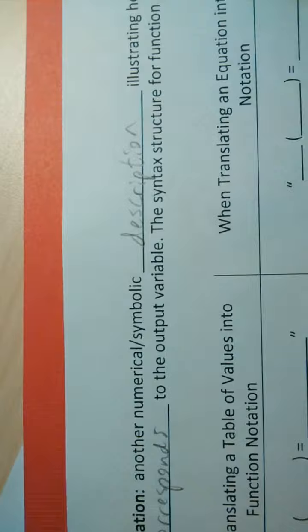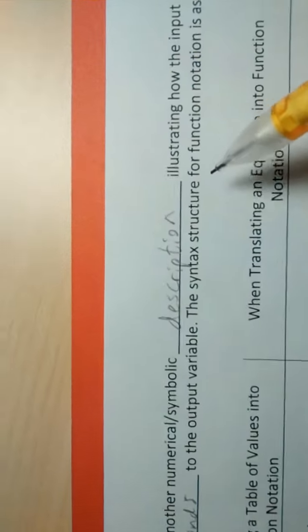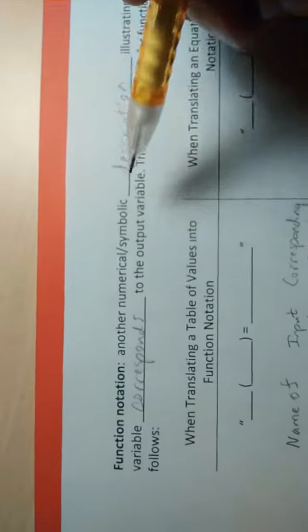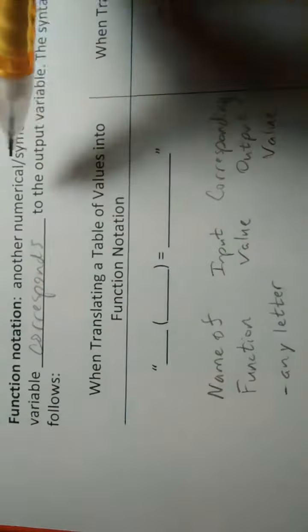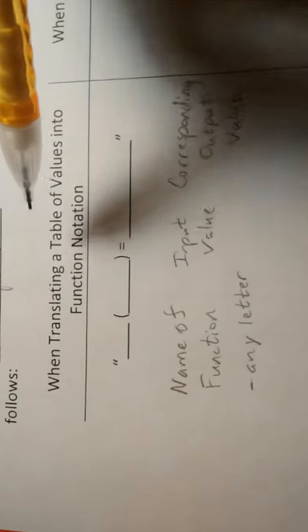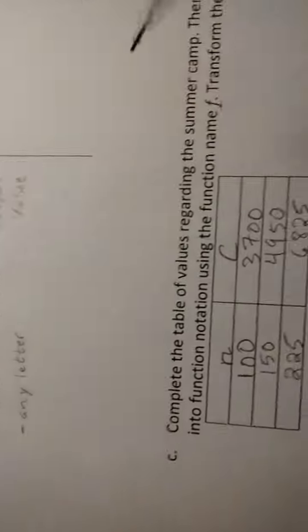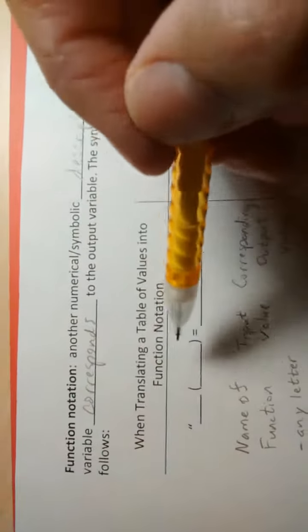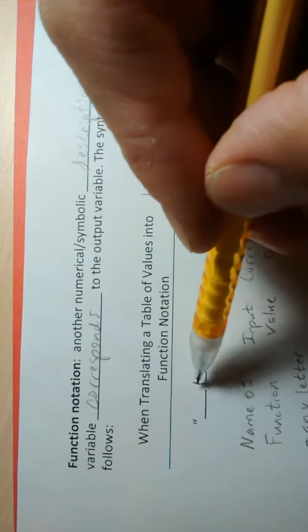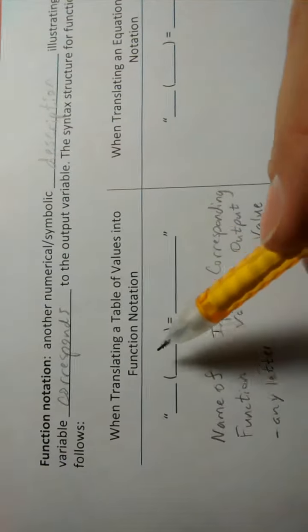So the syntax for function notation is the following way. Let's look at this first item here. When translating a table of values into function notation, like we're doing here, we're trying to take these table of values and translate it into function notation. Here's what we have. We have an empty space, a parenthesis, equal sign, and then another empty space.